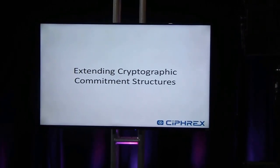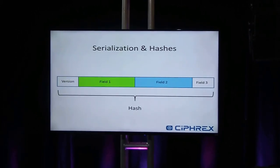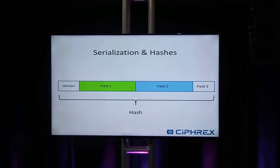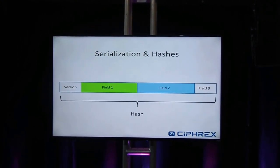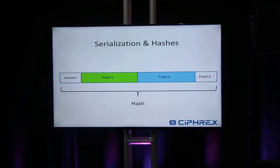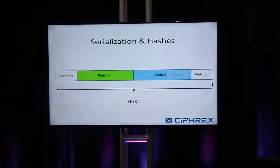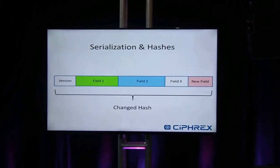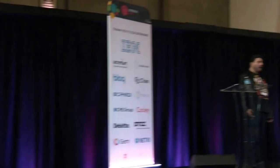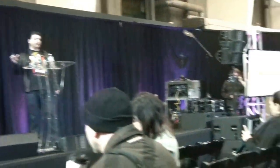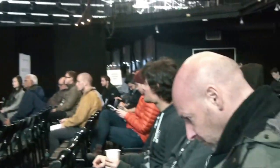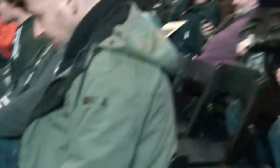If you want to extend these cryptographic commitment structures — say we have some objects and some data serialized in some format, and then we hash it — if we add another field to it, serialize it the same way, and hash it again, we're going to get a changed hash. This means that nodes that are not aware of this new field are not going to be able to detect the hash, so you're basically going to get nodes that do not agree on what the hash is, and this is a huge problem.